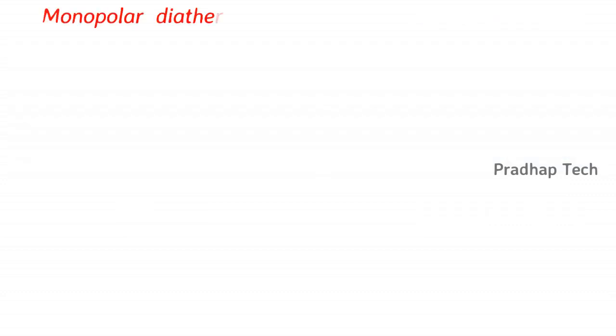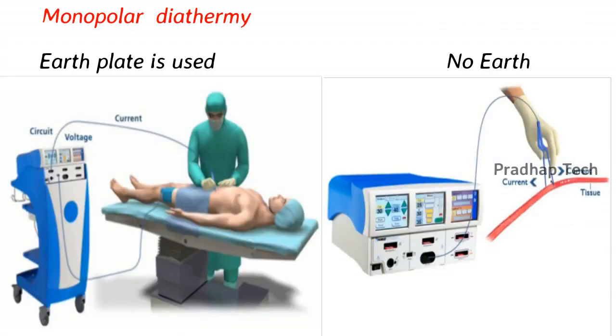In monopolar diathermy, an earthplate is used to receive the current. For bipolar, there is no need to use an earthplate because it has a receiver end.